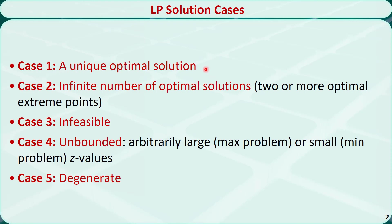Case 1: some linear programming problems may have a unique optimal solution. Case 2: if a linear programming problem has two or more optimal extreme points, all the points that are on the line between these two points are also optimal, so the problem has an infinite number of optimal solutions.